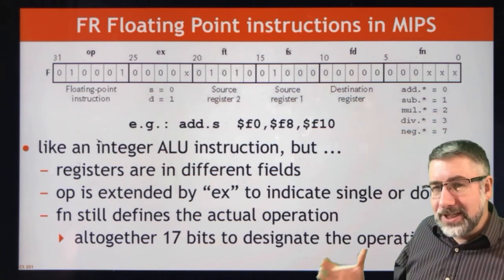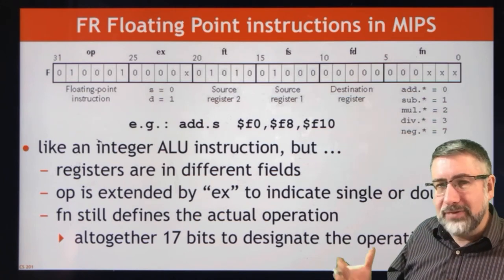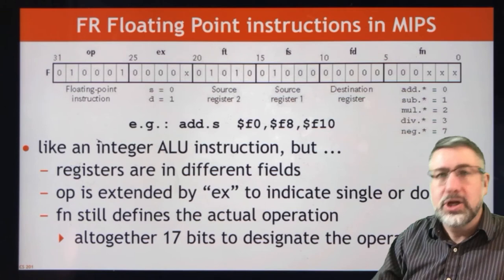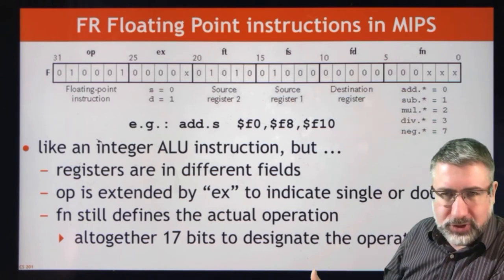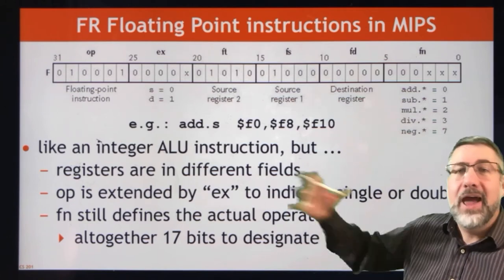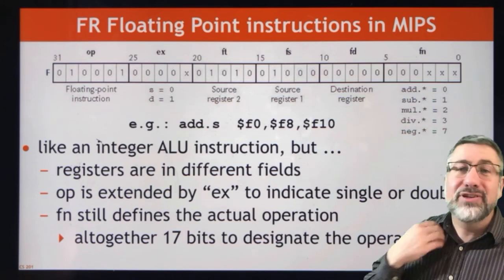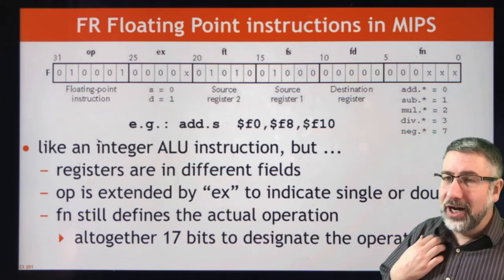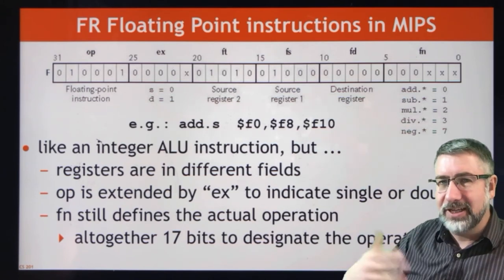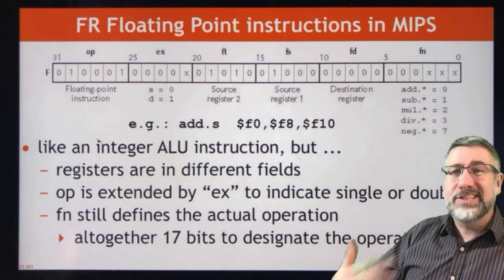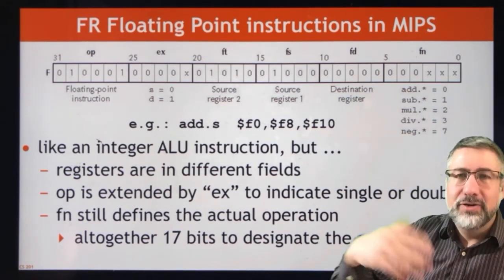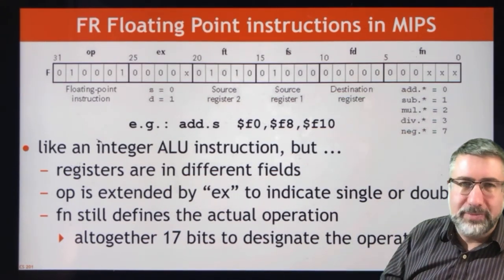In order to actually do that, you have to move information back and forth from the regular registers to the coprocessor registers, allow the coprocessor to do its thing, and then move the results back. So even though the floating point operations are long and complicated and take a lot of work, it's even worse than that, because you have to move the information first and then move it back again.